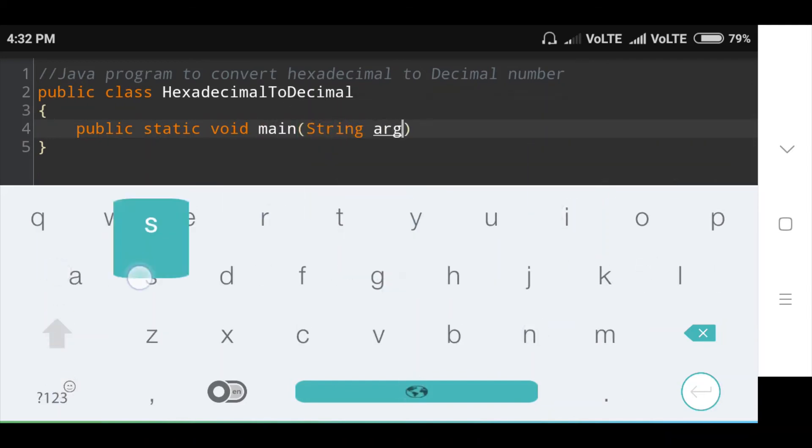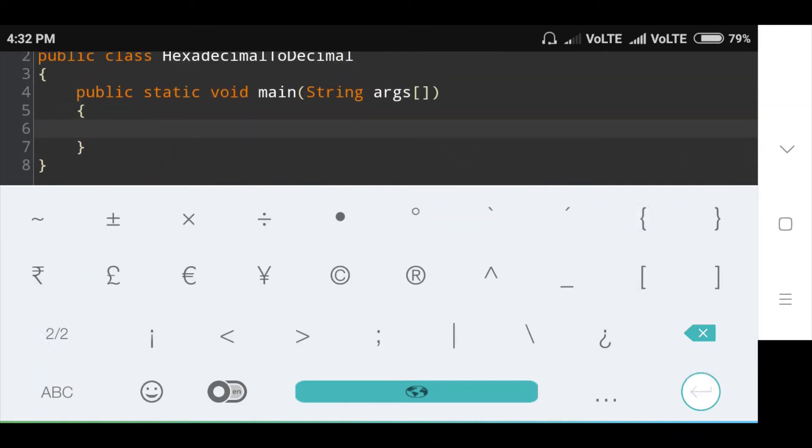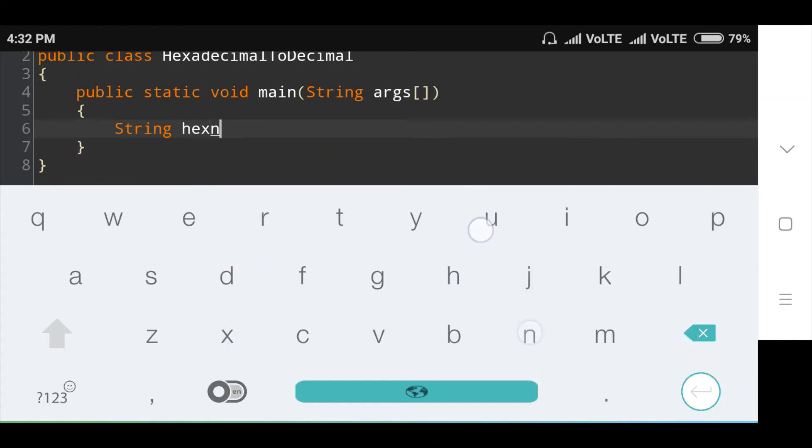Inside this main method, I will take String hexnum equals "6F".